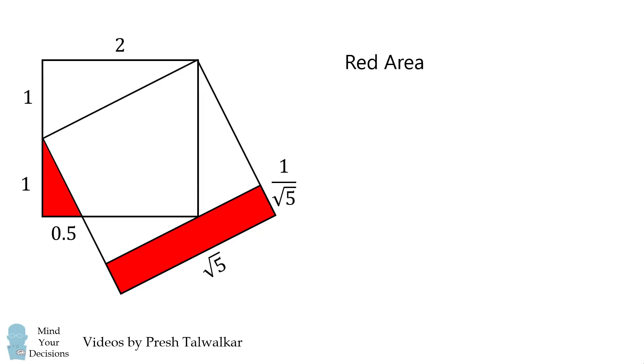The red area will be the sum of two shapes. It'll be the area of this, which is 1 half of 1 times 0.5. Then we have the area of this rectangle, which will be the square root of 5 multiplied by 1 over the square root of 5. This all simplifies to be 1.25.